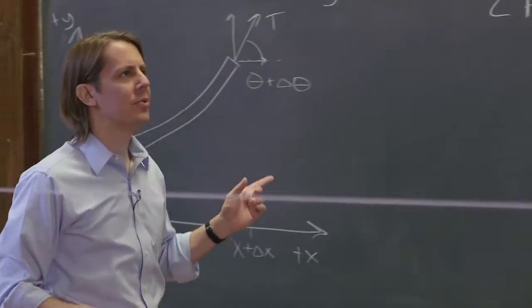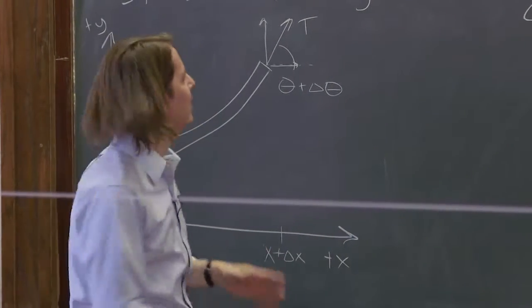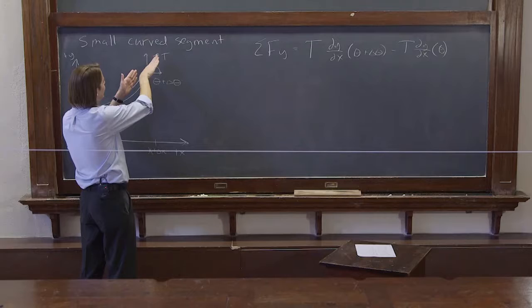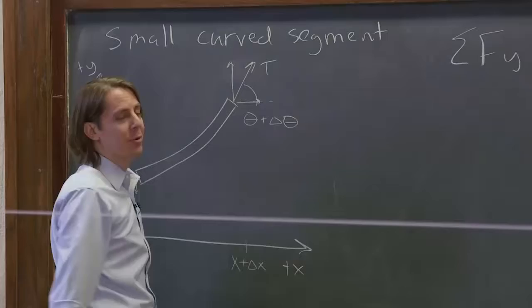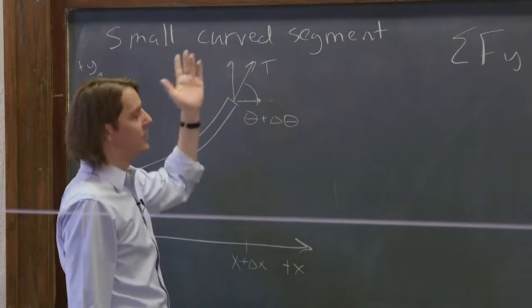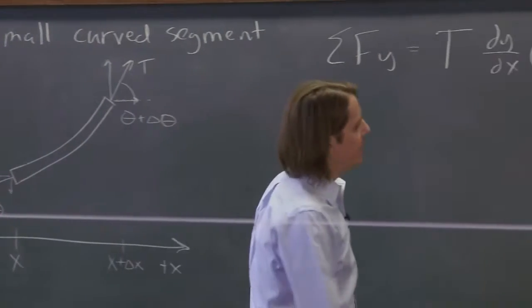If all that sine equals sine over cosine equals tangent equals rise over run equals slope equals dy/dx, if you didn't like all that, just look at it now. This is the tension, and the y component is all we care about. So it's going to be that total tension times the slope or proportional to that.